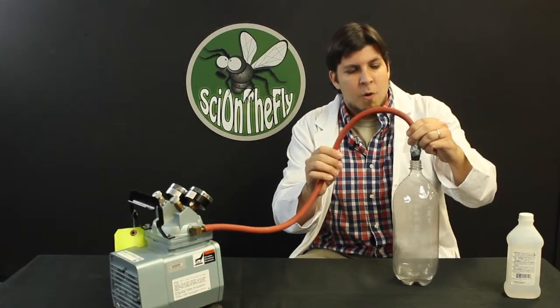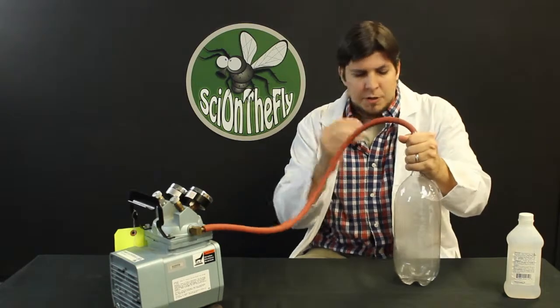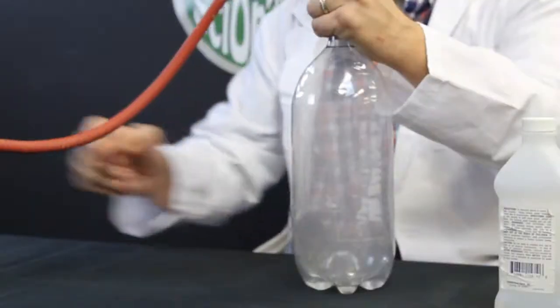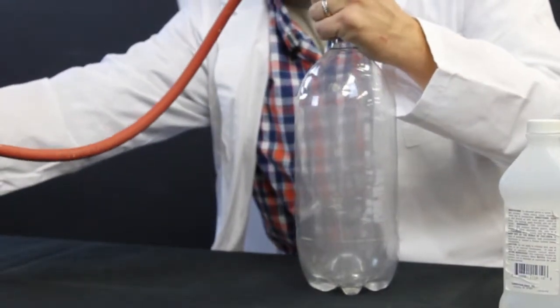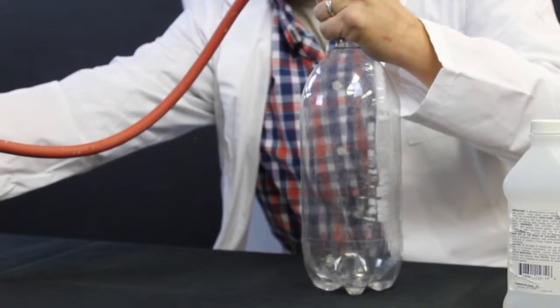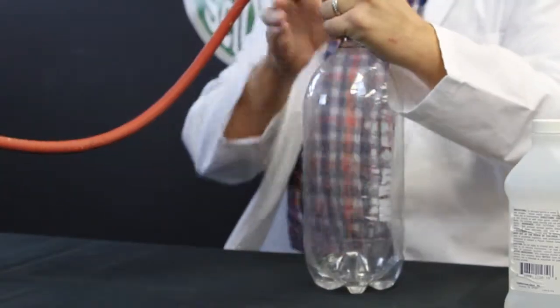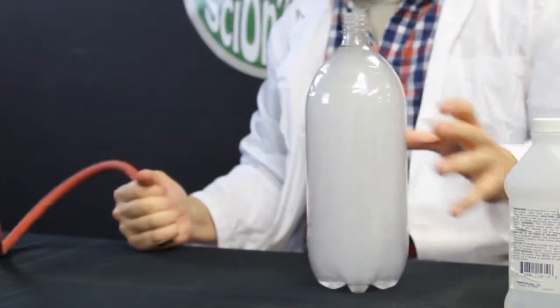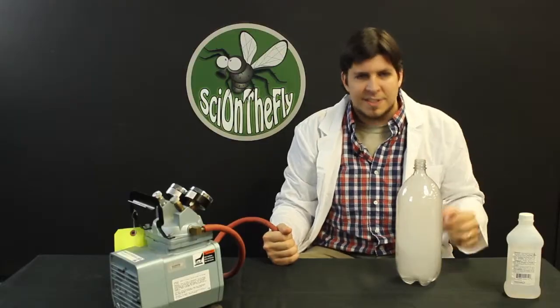I can make the cloud go away by adding pressure. So that's a low-pressure system with a cloud. I'm going to add pressure, high-pressure system, cloud goes away. Take away the pressure, low-pressure system immediately, instant cloud.